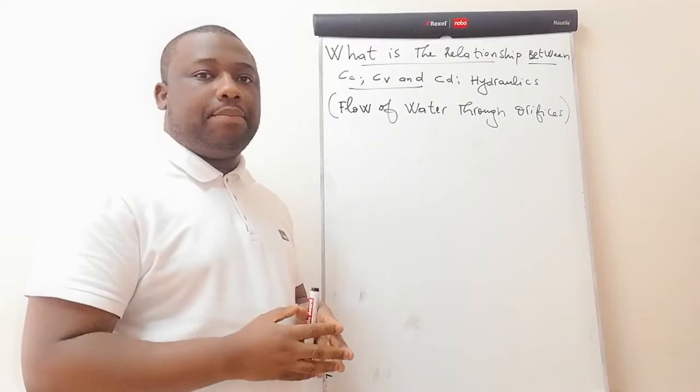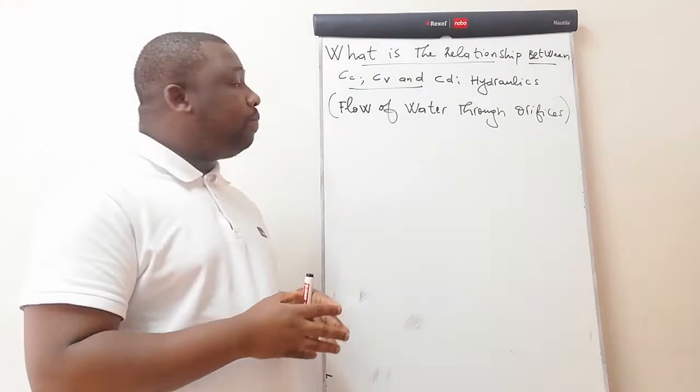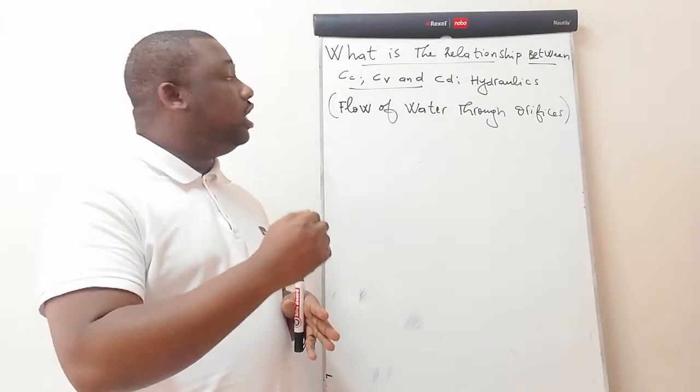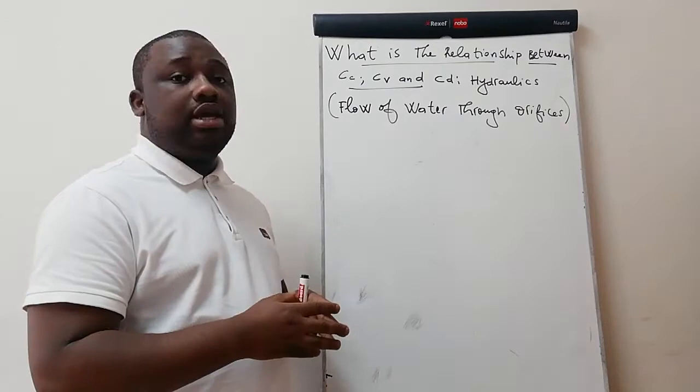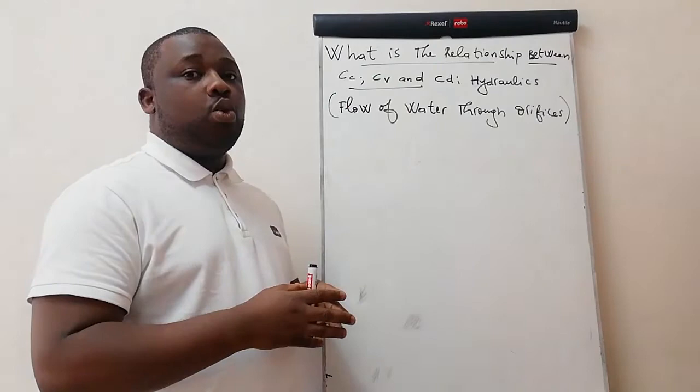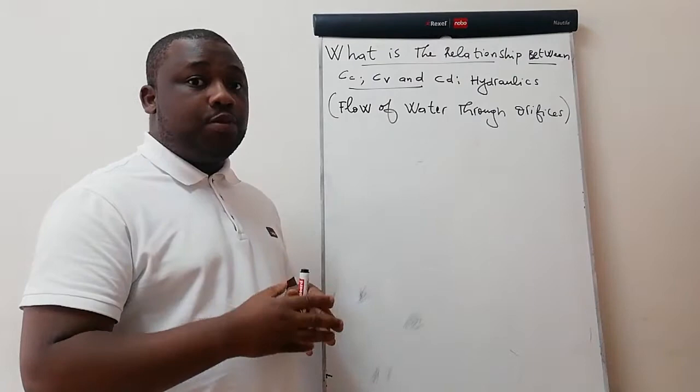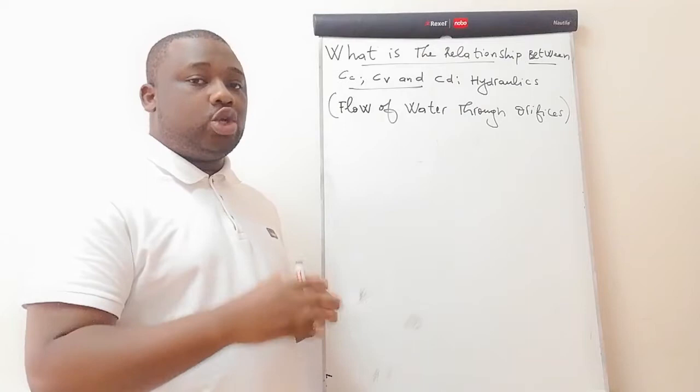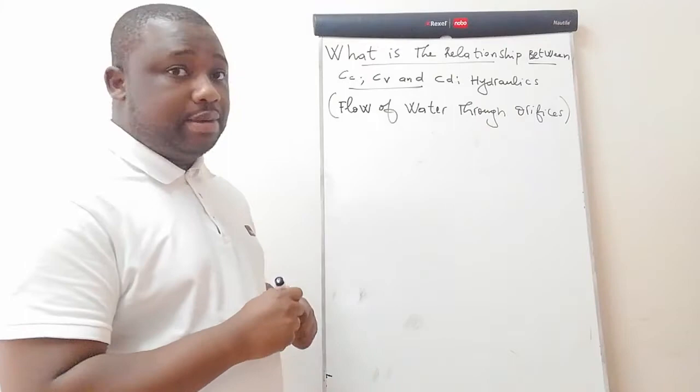So what is it that we're going to explain in this video? First of all, we're going to explain and define each coefficient — like what is CC, what is CV, and what is CD. Then from there, we're going to give the relationship between these three coefficients in terms of formula. Then there's a question that we'll put on the board. I'll solve step by step and show you what to do. Here we go with the explanation.